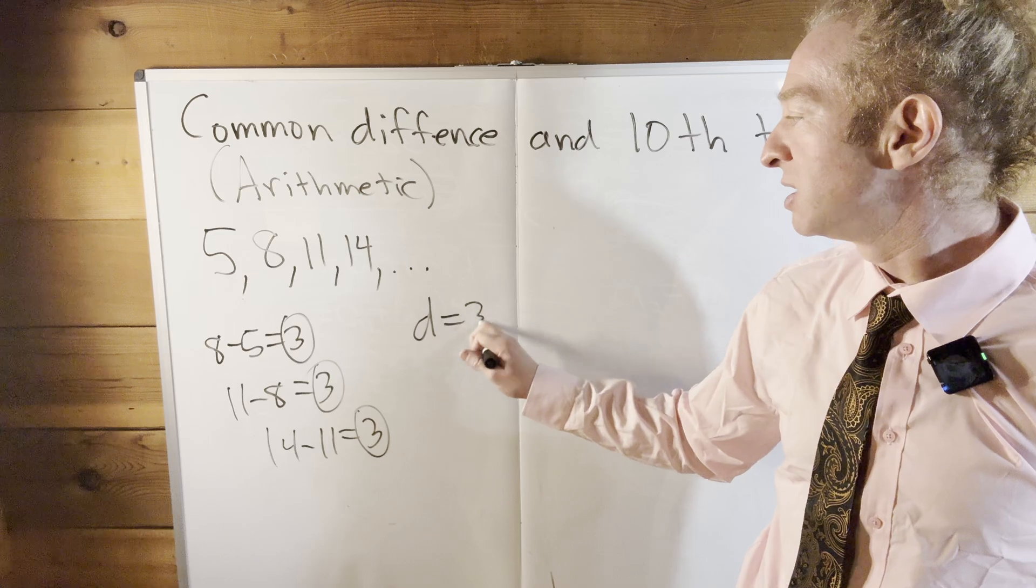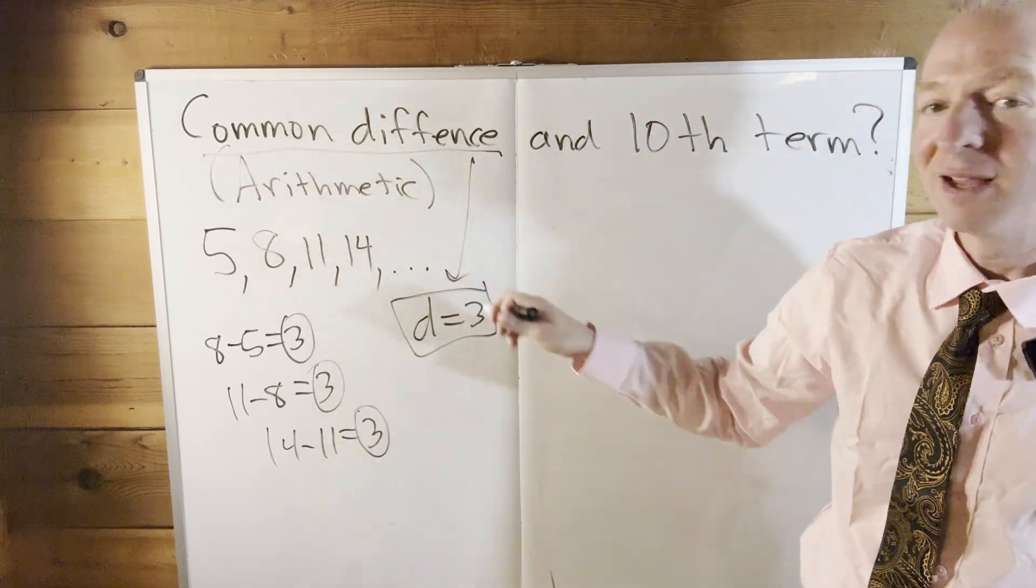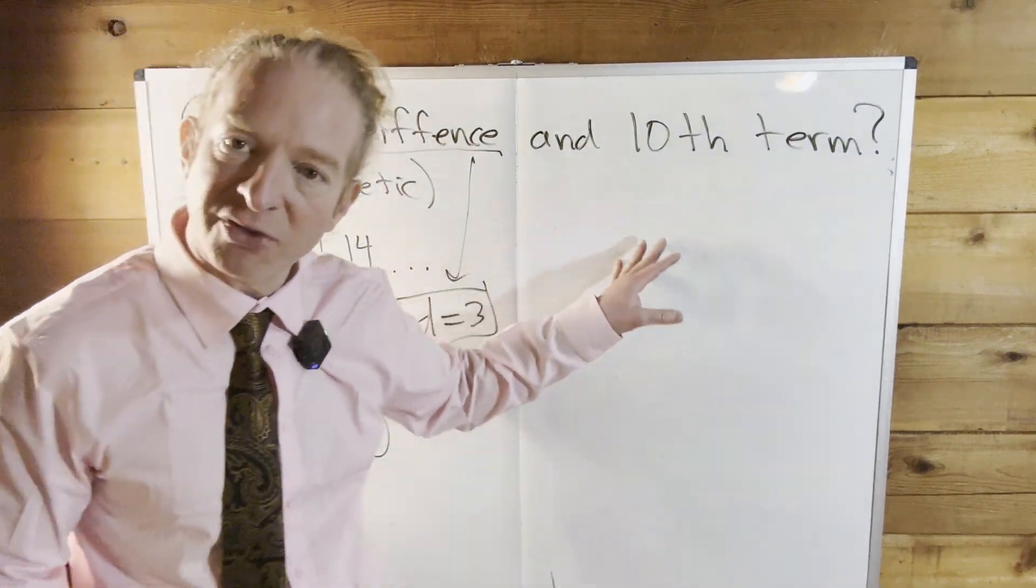D, little d, is the common difference. This would be the common difference. So that answers that part. The really interesting part of this problem is to find the 10th term.